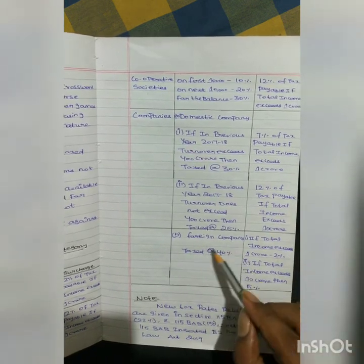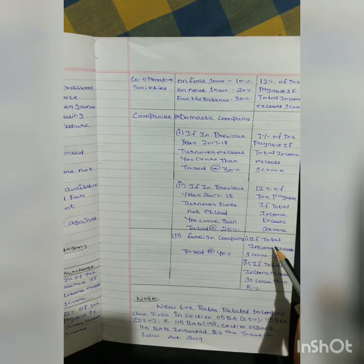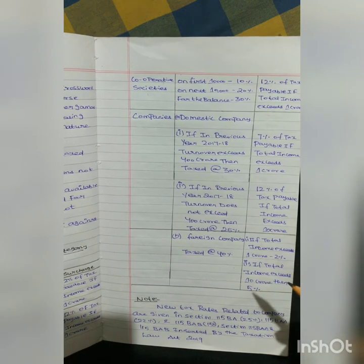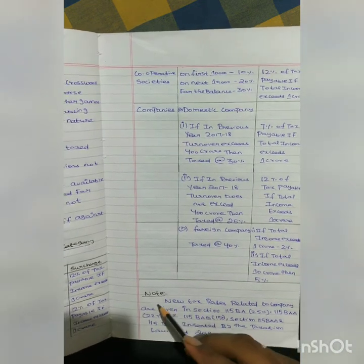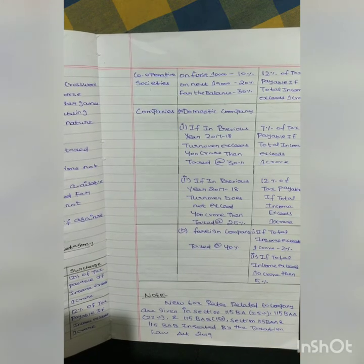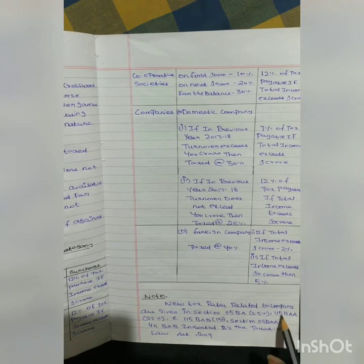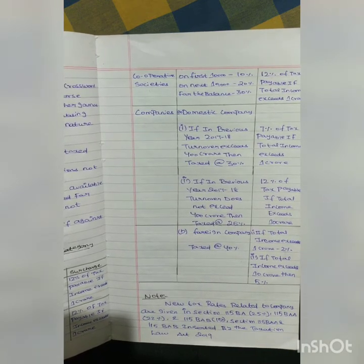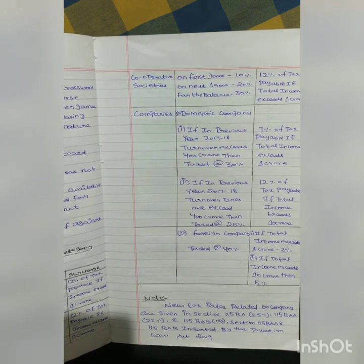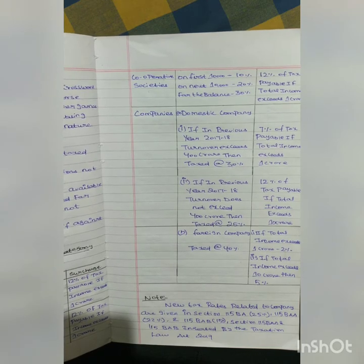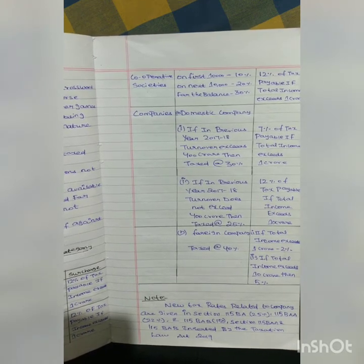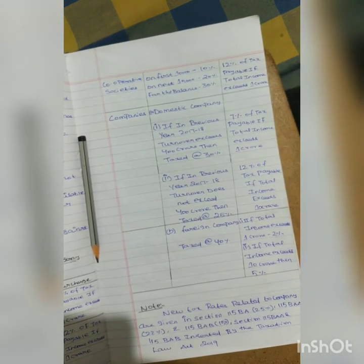For a foreign company, the tax rate is 40 percent. If total income exceeds 2 crore but is within 10 crore, a surcharge of 2 percent applies. If total income exceeds 10 crore, the surcharge is 5 percent. New tax rates for companies are under section 115BA at 25 percent, section 115BAA at 22 percent, and section 115BAB at 15 percent — the latter two being inserted by the Taxation Laws Act 2019.